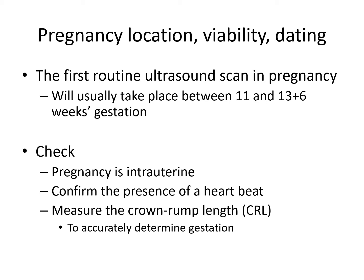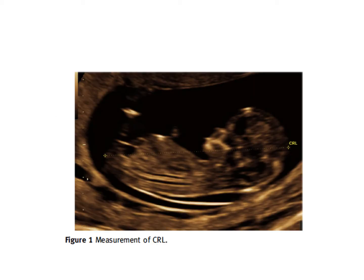The purpose of this ultrasound is manifold: it determines whether the pregnancy is within the uterus (intrauterine), confirms viability meaning there is a heartbeat, and dates the pregnancy. To date the pregnancy in the first trimester up to 13 weeks and six days, we measure what's called the crown-to-rump length (CRL). The crown is taken as the baby's head and the rump is the tip of the bottom, and we measure a straight line to give the CRL, which is the most accurate measure available to date a pregnancy.